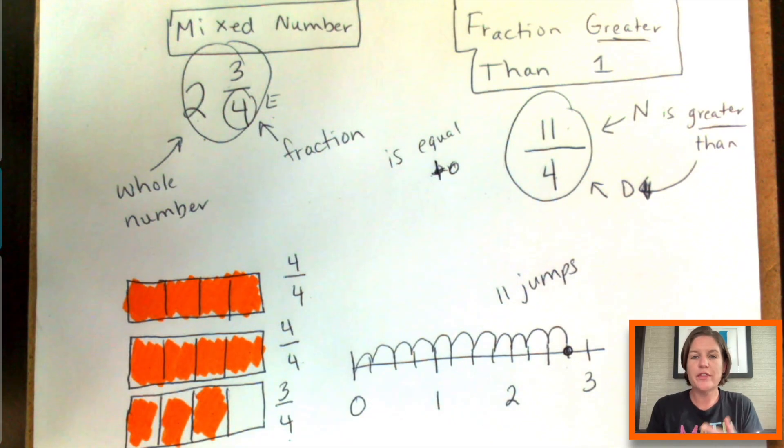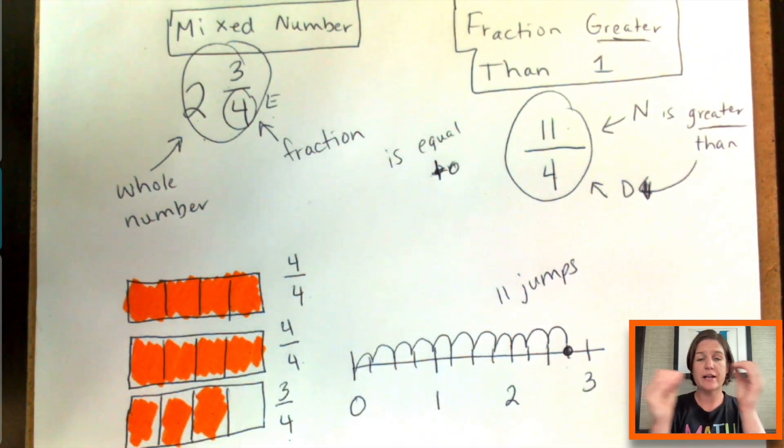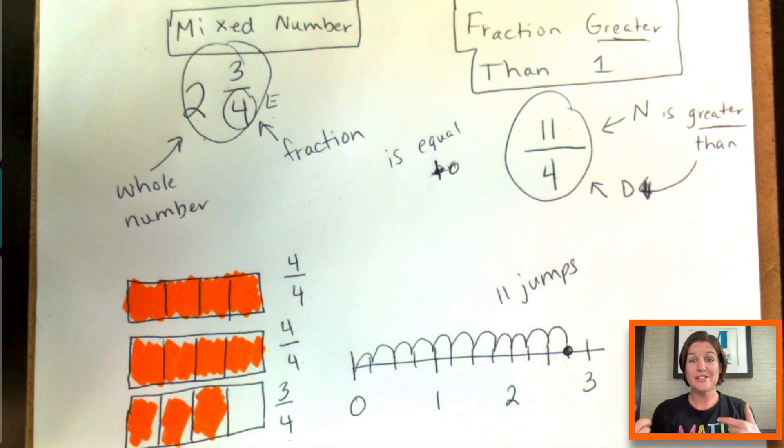Why? Because I want them to understand visually what's happening here, that two and three fourths is actually equal to eleven fourths, and being able to go back and forth using a visual model. Now in fourth and fifth grade, I do step it up and I teach more of a computation method that we might get into in the fourth and fifth grade videos later on. But that's how you do it here.